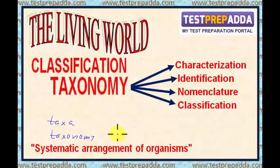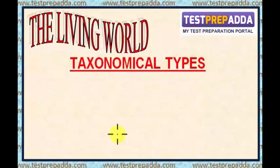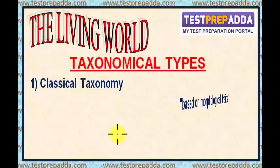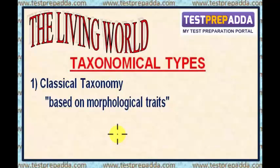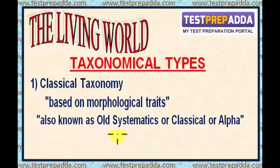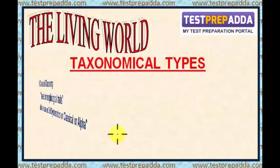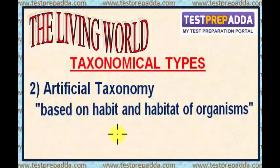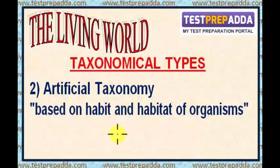Now I will talk about taxonomical types. First, Classical taxonomy: classification based on morphological traits is called old systematics, or classical, or alpha taxonomy. Second, Artificial taxonomy: this type of classification uses the habit and habitat of organisms for grouping. Pliny was the first to use this system.